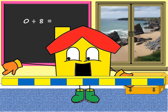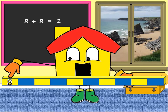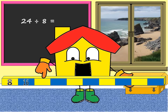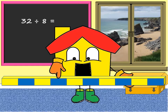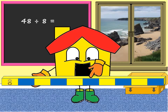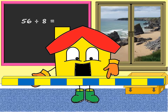How many groups of 8 are 0? How many groups of 8 are 8? 16 shared between 8. 24 shared between 8. 32 divided by 8. 40 divided by 8. How many groups of 8 are 48? How many groups of 8 are 56?